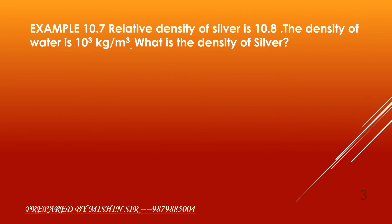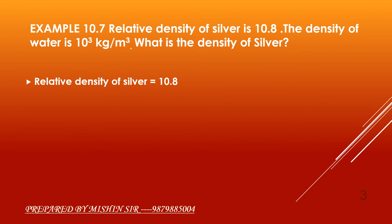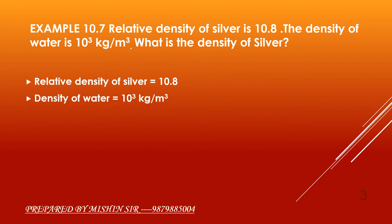We write the data. Relative density of silver is equal to 10.8. Density of water is equal to 10³ kg per meter cube. We need to find the density of silver.